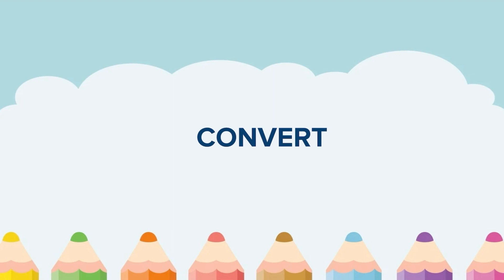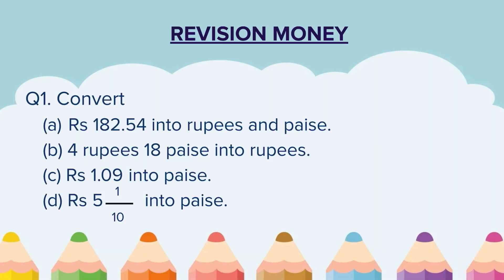And before starting, like the video and I wish you luck. Question 1: Convert. A) Rupees 182.54 into rupees and paise. B) 4 rupees 18 paise into rupees. C) Rupees 1.09 into paise. D) Rupees 5 and 1/10 into paise. Pause the video here, solve all the questions and then unpause and continue.